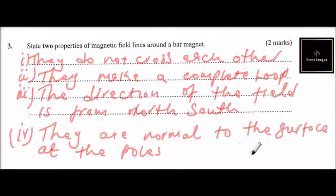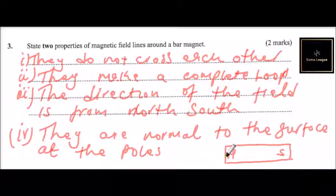What it means here is that normal means they make an angle of 90 degrees at the pole. So if you have that is our north, that is our south, when the magnetic field line is originating from north,